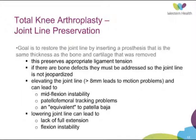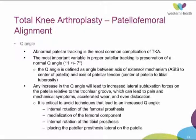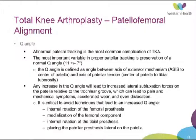We also want to preserve the joint line, which preserves ligamentous tension. Any bony deformities need to be corrected. We need to avoid elevating the joint line, as that causes instability and patellofemoral tracking issues. Lowering the joint line also has issues affecting extension and causing instability in flexion. The Q angle is normally around 11 degrees — it's the angle between the axis of the extensor mechanism from the ASIS to the centre of the patella, and then the patellar tendon from the centre of the patella down through the tibial tuberosity. Changes in this will affect patellar tracking.